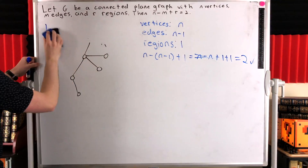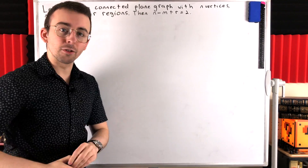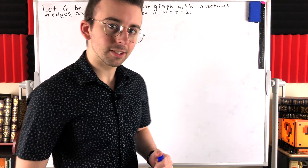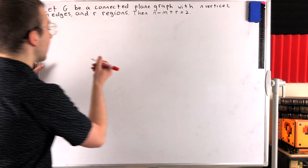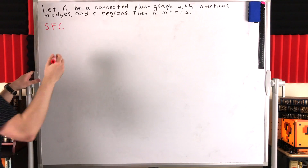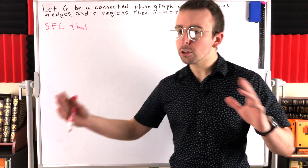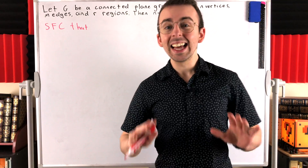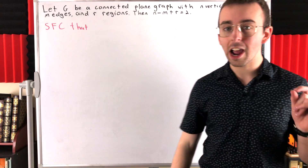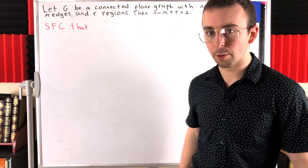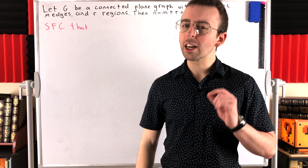So all we have left to worry about for the rest of the proof are graphs that are not trees. Since we're talking about connected graphs, if it's not a tree, that means it does have cycles. Now we can move on to the minimum counter example part of the proof. Suppose for the sake of contradiction that our result does not hold. Among all connected plane graphs that violate this result, let's consider one of minimum size — one that has the minimum number of possible edges.